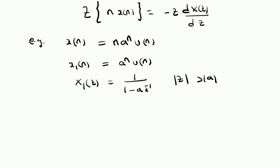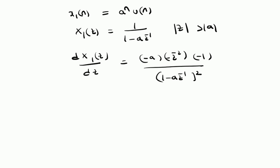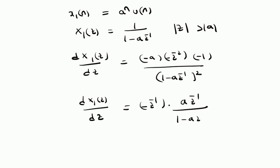We apply differentiation on both sides. The derivative of X1 of Z equals minus a times Z power minus 2, times minus 1, divided by 1 minus a Z inverse whole square. This can be rewritten as the derivative of X1 of Z equals minus Z inverse multiplied by a times Z inverse divided by 1 minus a Z inverse whole square.